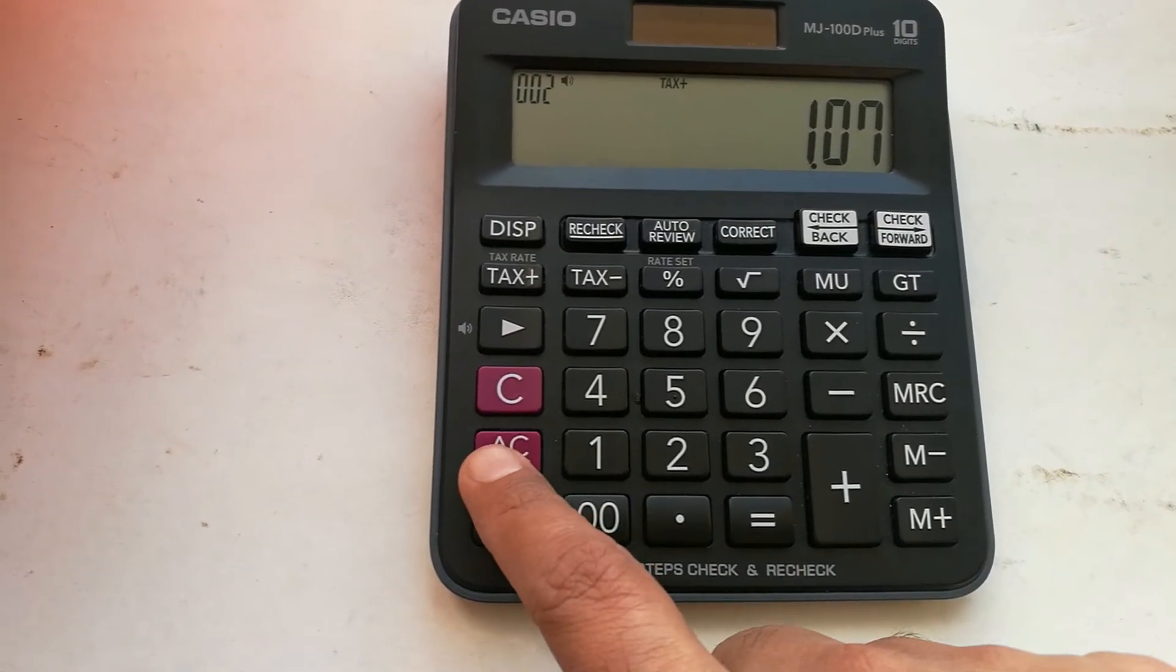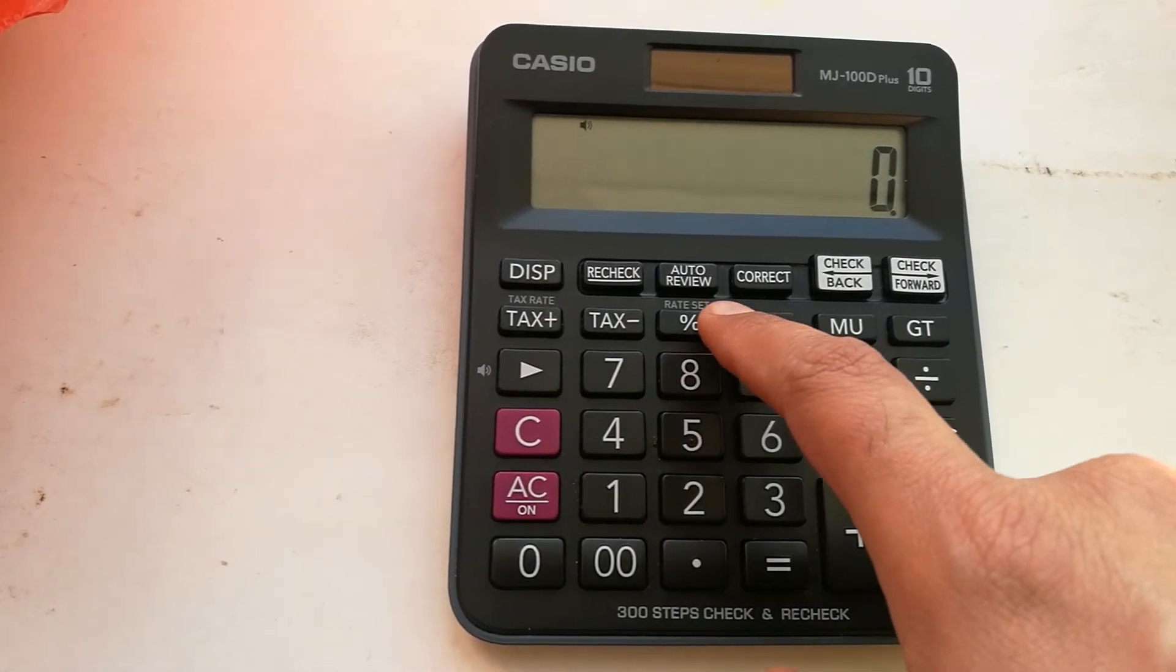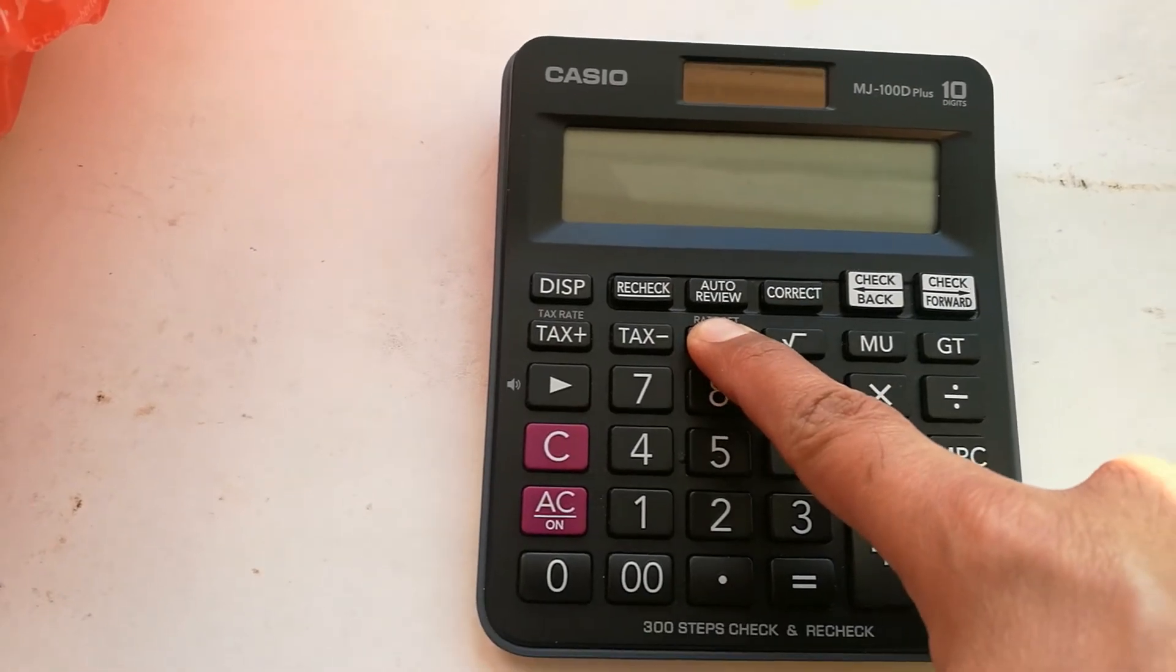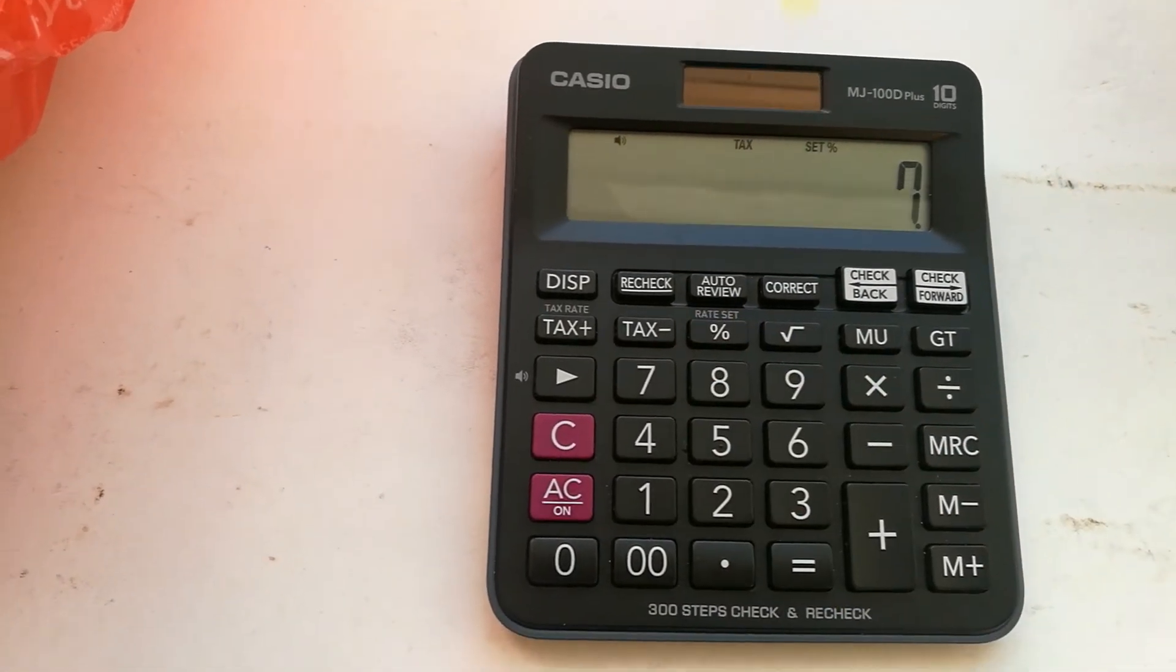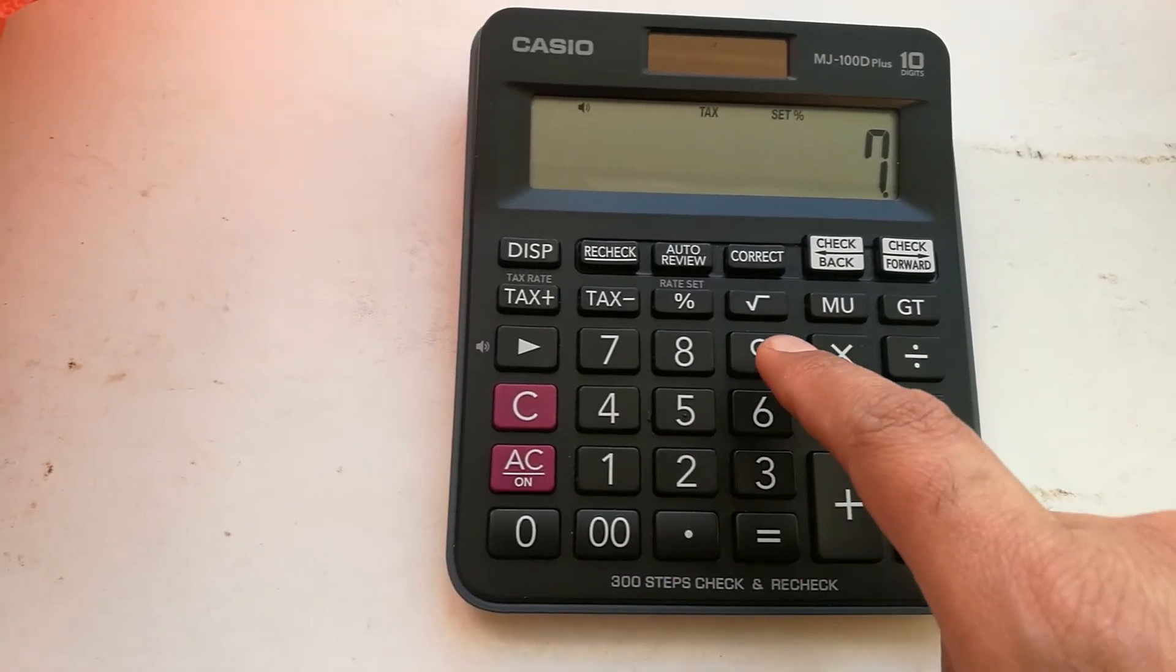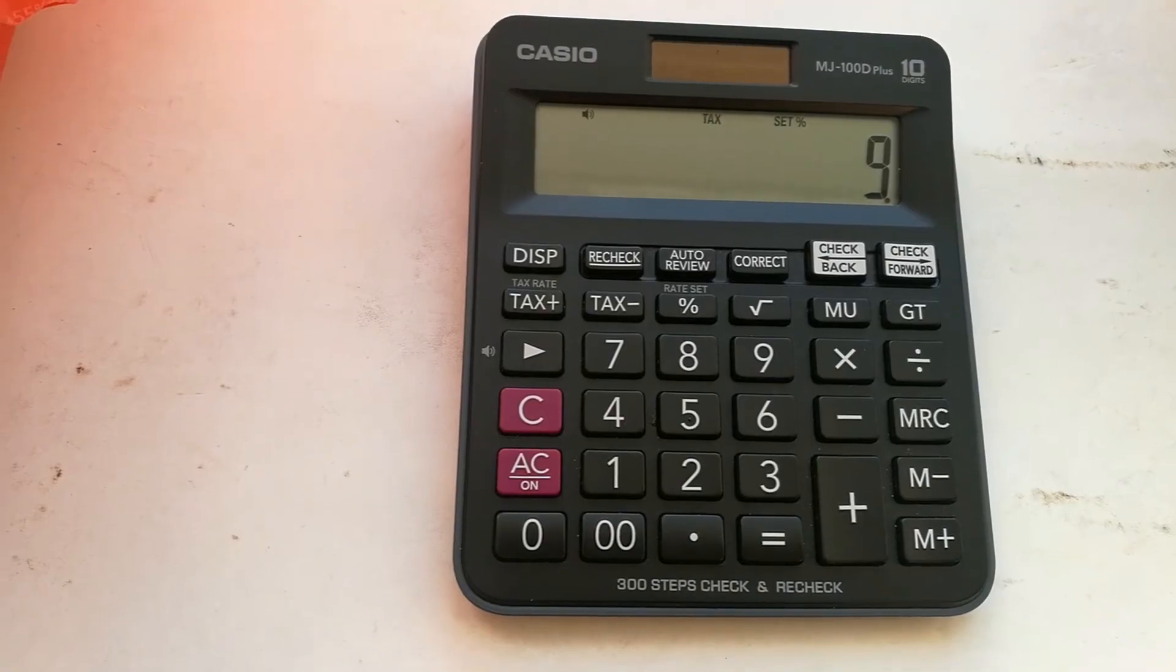I will show you with one more example to make it clear, because this tax rate is really important. This is the rate set button. We keep pressing it and it's showing now the old tax rate that we saved, so it is 7. Now we want to change it to 9. So we press 9 and then the multiply button.